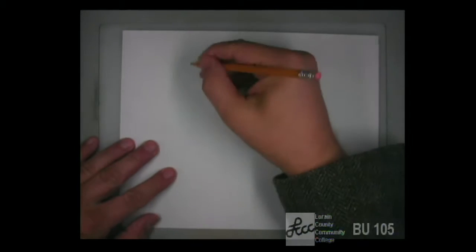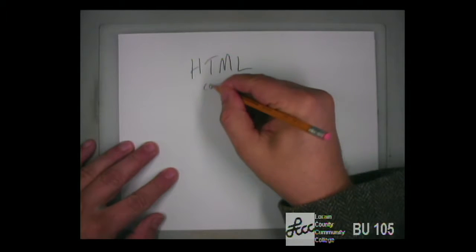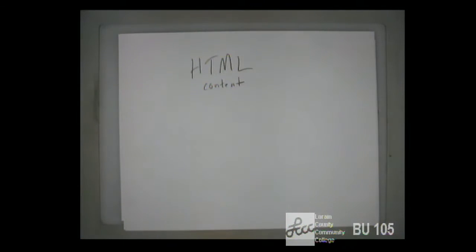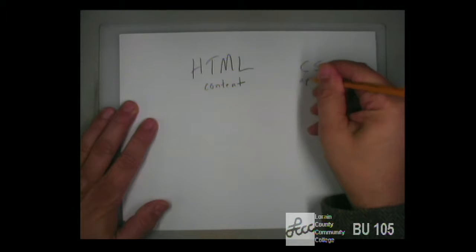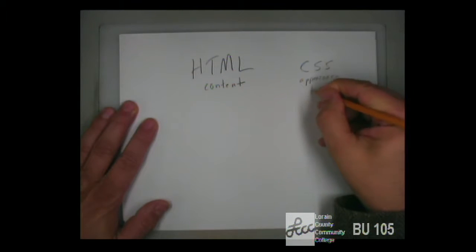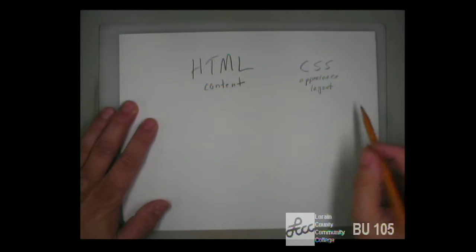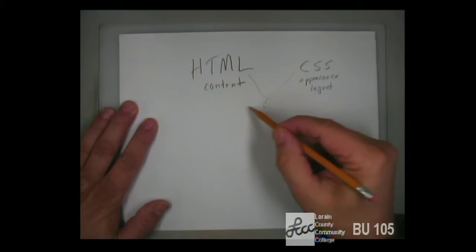Here's where we're at as far as talking about mobile web development. Way back at the beginning of class, we talked about HTML and said HTML is for the content of a web page. We then talked about CSS is for the appearance and layout of the page. And combined together, this forms a web page that the user sees.